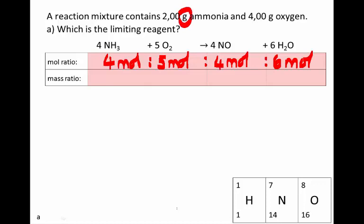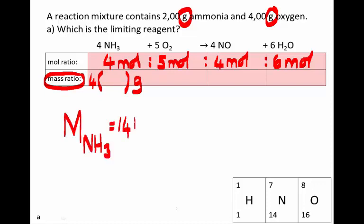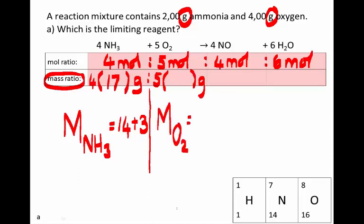Since we have grams in the information given, we need to convert this into a mass ratio. We ask ourselves: what is the mass of 4 moles of ammonia? It will be 4 times the molar mass of ammonia. The molar mass of NH3 is 14 g/mol for nitrogen plus 3×1 = 3 g/mol for hydrogen, giving 17 g/mol. So 4 moles is 4×17. For oxygen gas (O2), the molar mass is 2×16 = 32 g/mol, so 5 moles of O2 has a mass of 5×32.